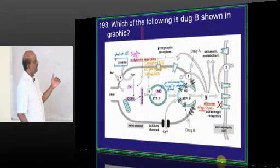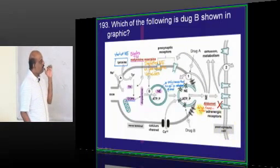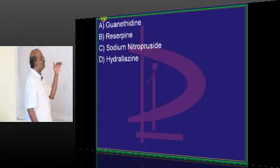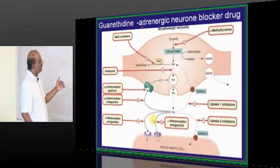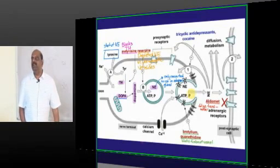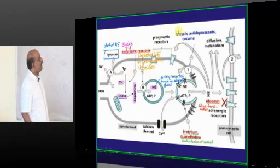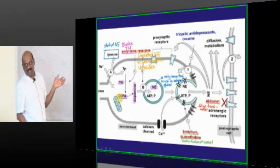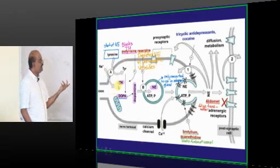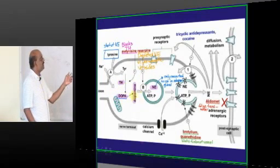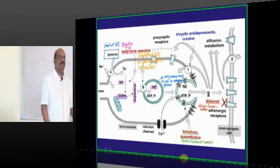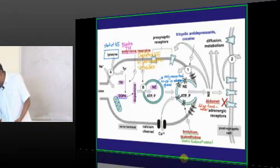There is drug B which is shown in the graphic. Possibly what could it be? Typically, it is preventing the release of norepinephrine into the synaptic junction in the brain. It is guanethidine which typically has that kind of mechanism of action. Bretylium and guanethidine at the synaptic level will block the release of the neurotransmitter. You must know how tricyclic antidepressants and cocaine act—they are reuptake inhibitors. How does metyrosine typically act? Metyrosine prevents the tyrosine to DOPA conversion, which is the precursor of the catecholamines. How does reserpine act? All these are important mechanisms of action of the autonomic nervous system drugs, one of the favorite questions of the examiner.